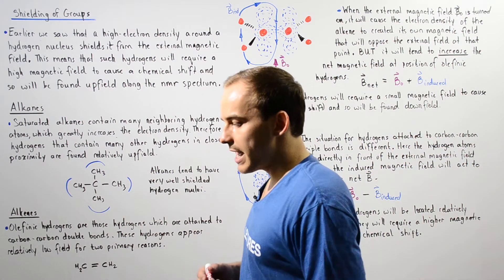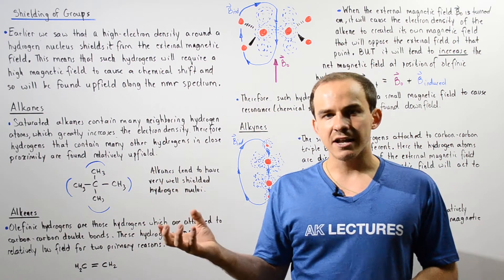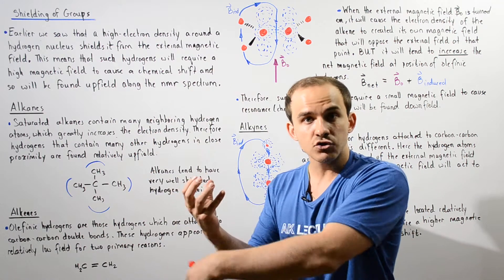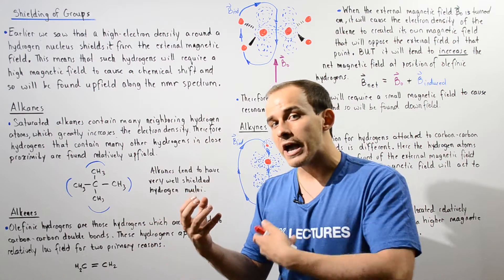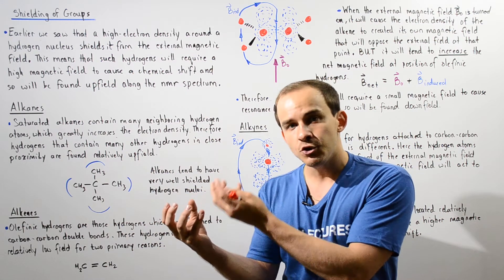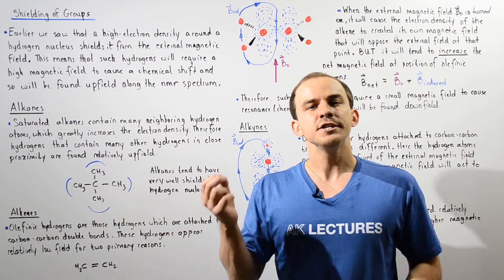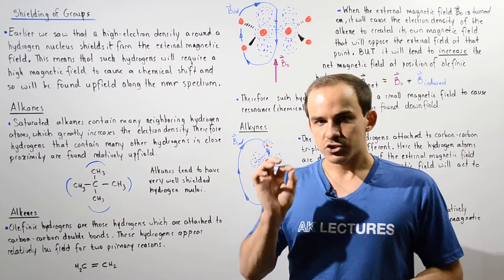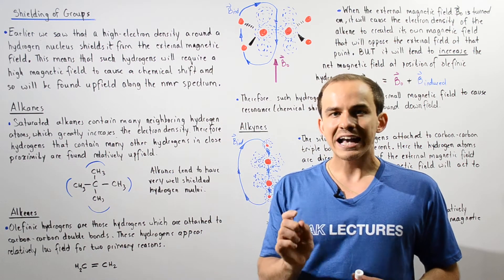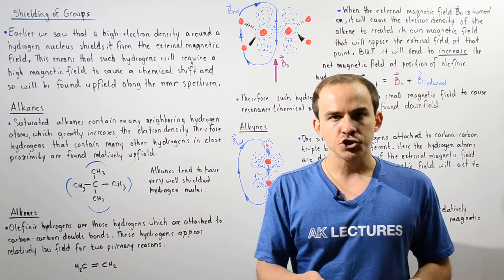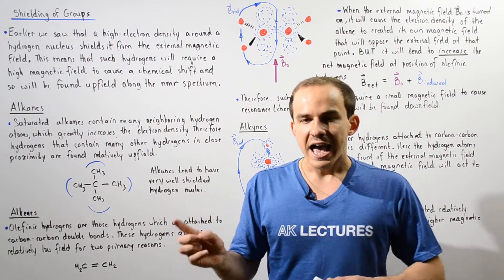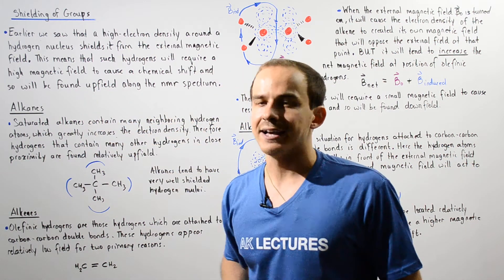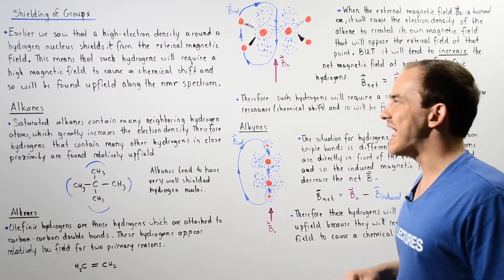Whenever we have a hydrogen atom and around that hydrogen atom we have a very high electron density — a lot of electrons — that very high electron density will basically shield the nucleus of that hydrogen atom from the external magnetic field. That means a greater strength of magnetic field will be needed to actually induce or create a chemical shift of that particular hydrogen atom, and that will place it relatively upfield along the x-axis of the proton NMR spectrum.